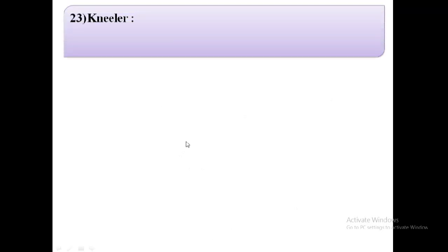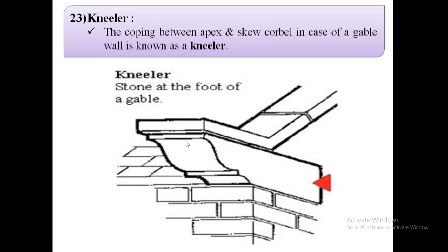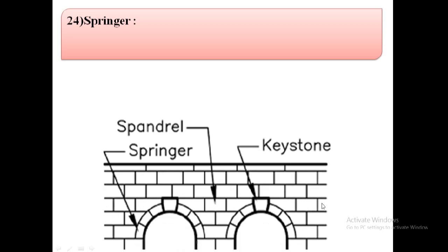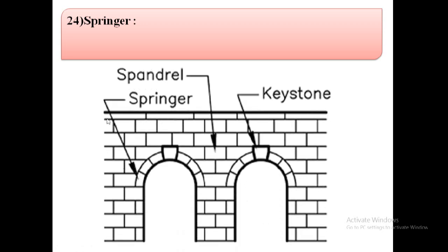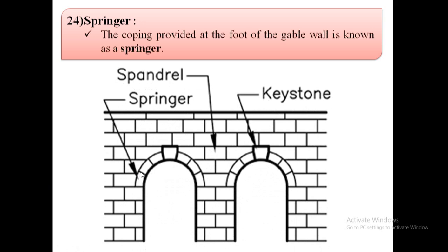The next term is kneeler. The coping between the apex and the skew corbel in the case of a gable wall is known as a kneeler. The next term is springer. The coping provided at the foot of a gable wall is known as a springer.